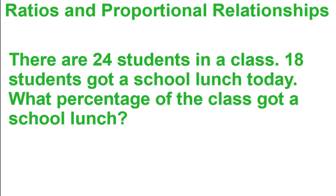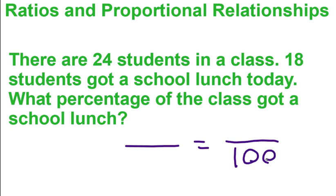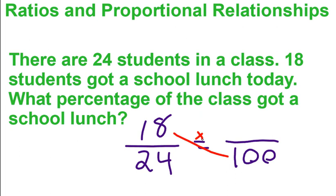We set up a proportion. We put 100 on the bottom right because the percentage goes over 100 — that's what we're trying to find. On the left side we do part over whole. The part is 18 and the whole is 24. The two numbers diagonal from each other we multiply, and the number diagonal from our blank is what we divide by. So we do 18 times 100 divided by 24, which gives us 75%.